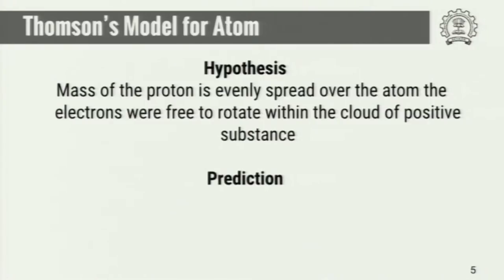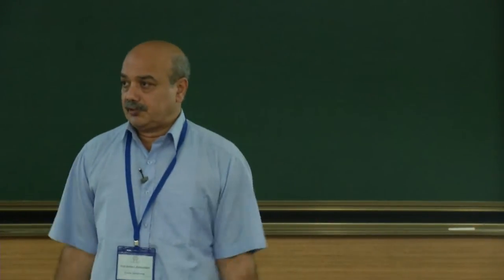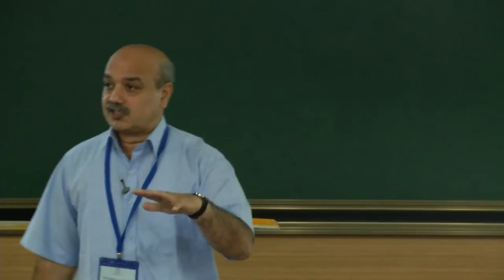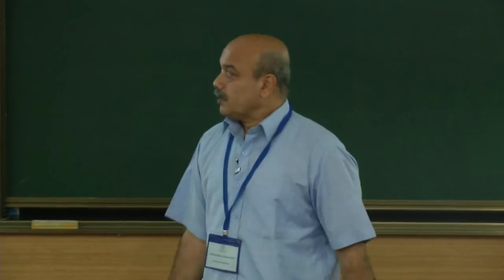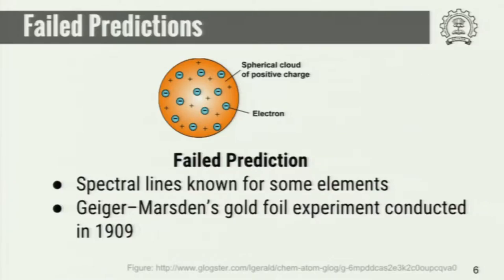The prediction of Thomson's model was that such an arrangement would lead to electrical neutrality of the atom — this was a successful prediction. But could it predict some other behavior, some other phenomenon that was observed with the same underlying cause, that is the structure of the atom? That question arose soon, as new experiments were performed, new phenomena were observed, and it was necessary to use the atomic structure to explain those phenomena.